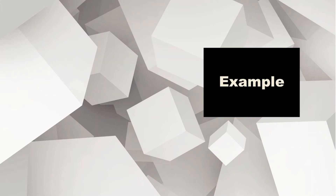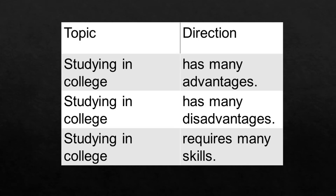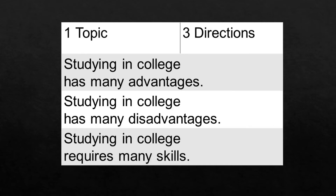Let's have an example. Our topic is 'studying in college.' We have one topic and three example directions: 'has many advantages,' 'has many disadvantages,' and 'requires many skills.' Note that even though we have only one topic, because we have three directions we are able to produce three topic sentences.